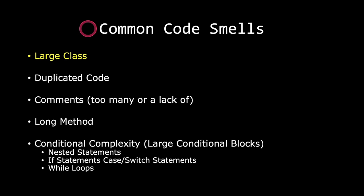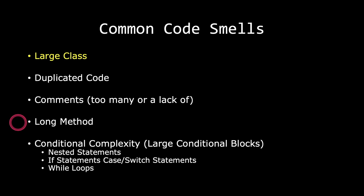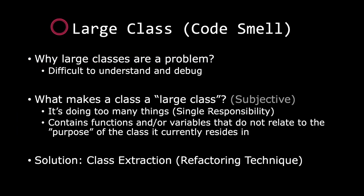Code smells are all subjective. For example, what constitutes a large class? There are no hard rules. How much is too much when it comes to duplicated code? How many comments do you need? What is considered a long method? Large classes are difficult to understand and debug. In my personal opinion, a large class is one that does too many things — a class should do just one thing if it is able to. A smell of a large class is if it contains functions or variables that don't relate to its purpose.